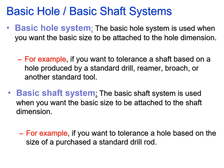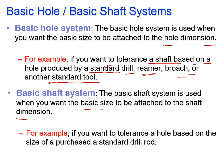The basic hole system is used when the basic size is attached to the hole dimension, and the basic shaft system is used when the basic size is attached to the shaft dimension. If you want to tolerance a shaft based on a hole produced by a standard drill, reamer, broach or another standard tool, you simply use the tool size for the required hole size. If you want to tolerance based on the size of a purchased standard drill rod, that would apply to a basic shaft system.